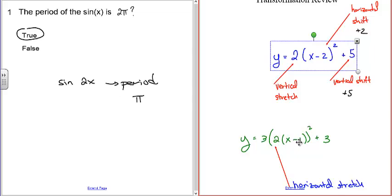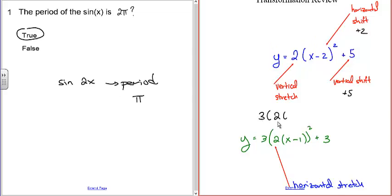Here's an example with a horizontal shrink where the 2 is inside the parentheses of the quantity being squared. If you have 2x − 1, that doesn't properly reflect the horizontal shift. Just like factoring out a negative sign to identify a y-axis reflection, you do the same when there's a constant inside — factor it out of both terms. So 3(2x − 2)² is really 3·2²(x − 1)². You might say the shift is 2 units, but it's actually 1 unit.